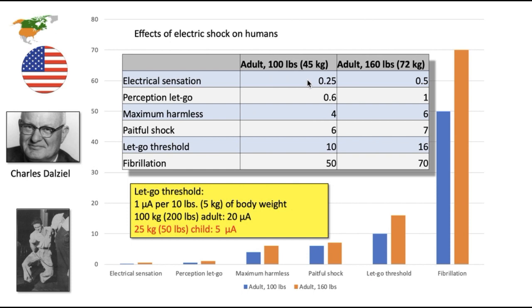The effect of the electricity on the body depended on the person's weight. For instance, electrical sensation, where you begin to sense that you're being shocked, for 100 pound adults, was a quarter of milliamp. For 160 pound adults, half a milliamp.